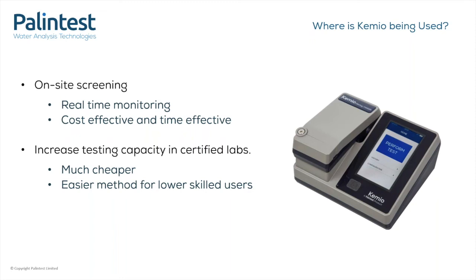Chemio Heavy Metals is currently being used in fields but also in labs to significantly increase the testing capacity. In this setting, Chemio is more cost-effective both in terms of initial investment but also in terms of the running costs of performing the tests and maintaining the instrument. Additionally, the alternative is ICP-MS, which is a very technical process that requires highly skilled users to perform it, whereas Chemio Heavy Metals can give reliable, accurate and precise data with a much less skilled user.